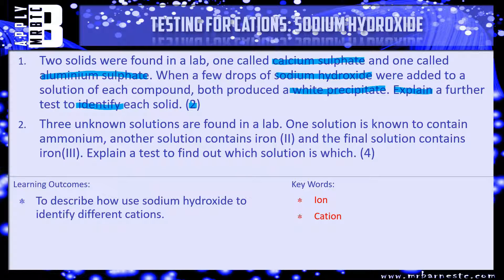On to question two. Three unknown solutions are found in a lab. One solution is known to contain ammonium, another contains iron two, and the final one contains iron three. Explain the test to find out which solution is which. So again, what do you add? That should hopefully be fairly obvious to you now. And then what will you see? How can you prove which one's ammonium, which one's iron two, and which one's iron three? Pause the video, have a go, and we'll see how you've done in a min.